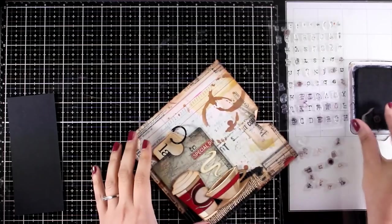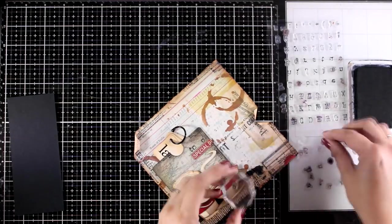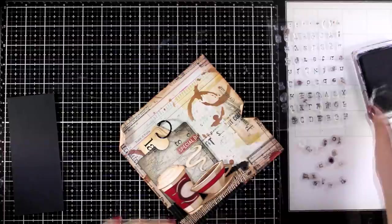And I will use a tiny alphabet stamp that I have in my stash to stamp to-do on top of the pocket.